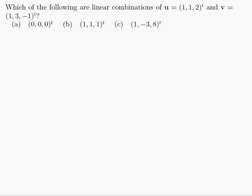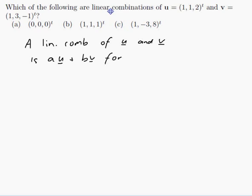Which of the following are linear combinations of u, which is equal to [1, 1, 2] transpose, and v, which is equal to [1, 3, -1] transpose? There are three to decide. First, let's understand the problem. What does it mean to be a linear combination? That would mean it's the sum of some multiples of u and v. A linear combination of u and v is a·u plus b·v for some a and b in ℝ. That's the definition of a linear combination.